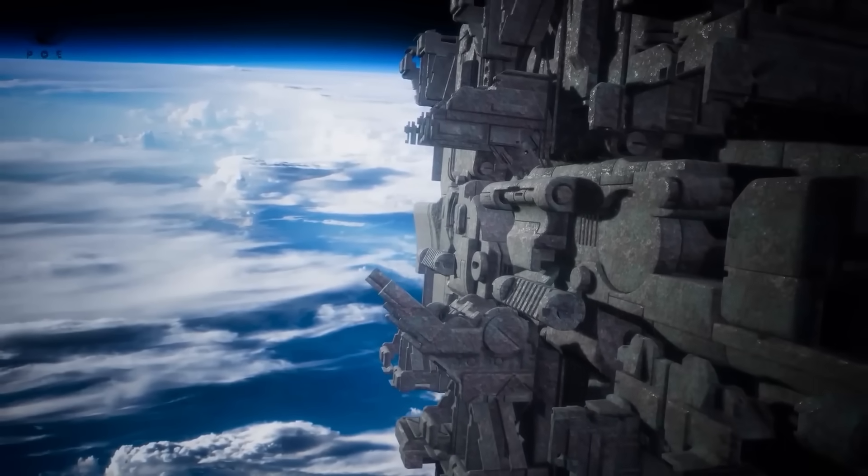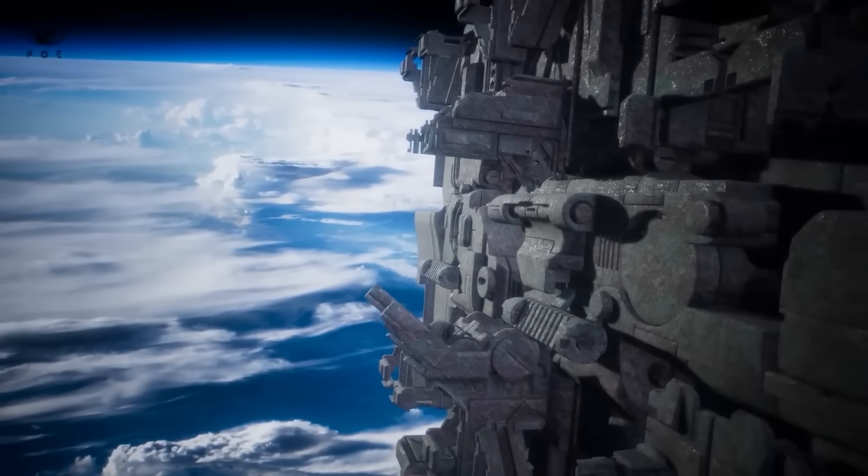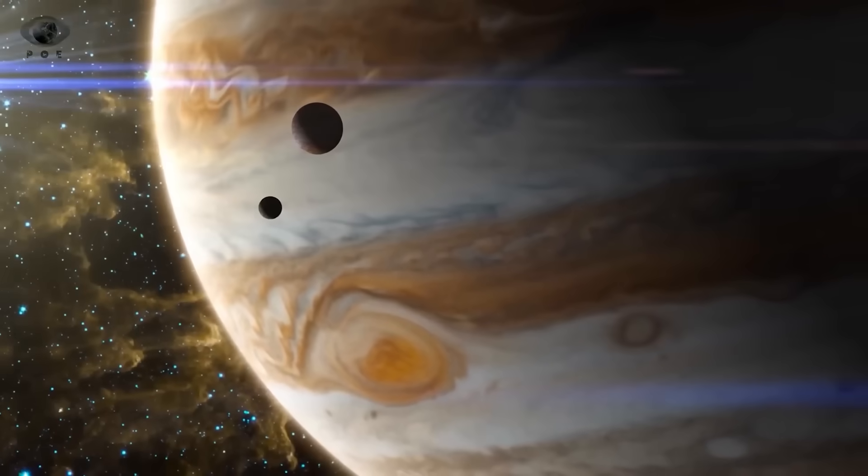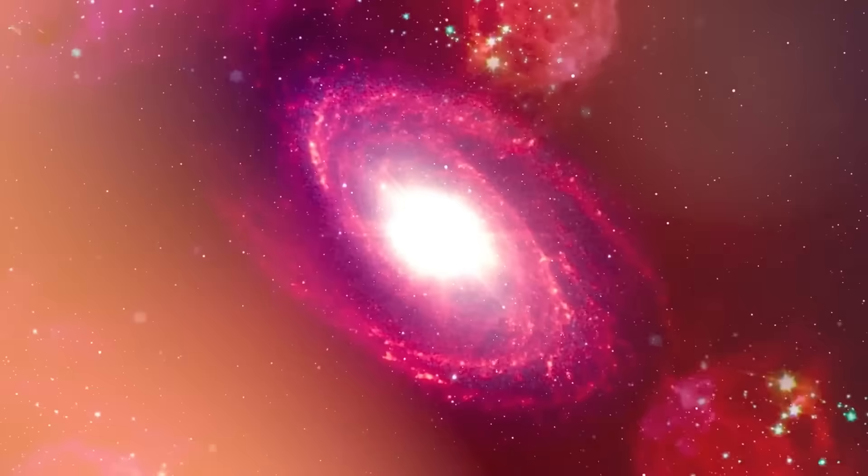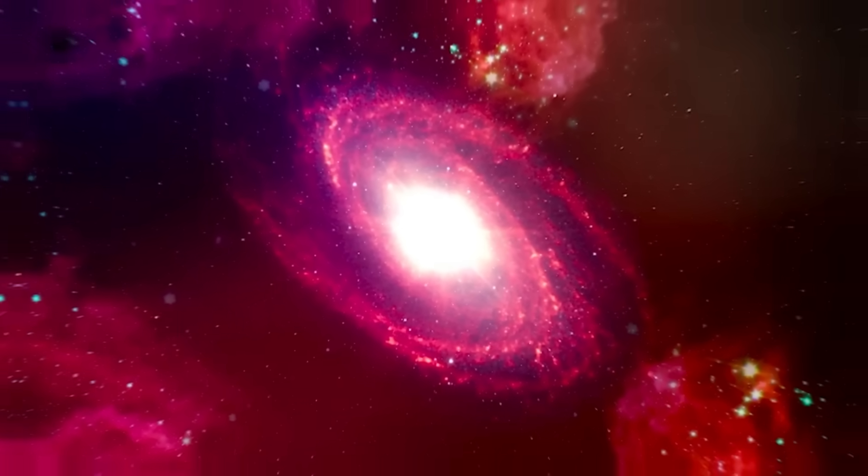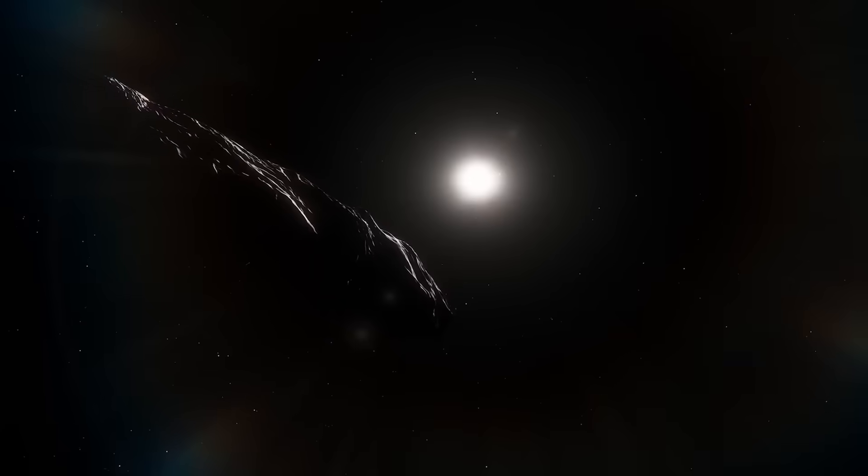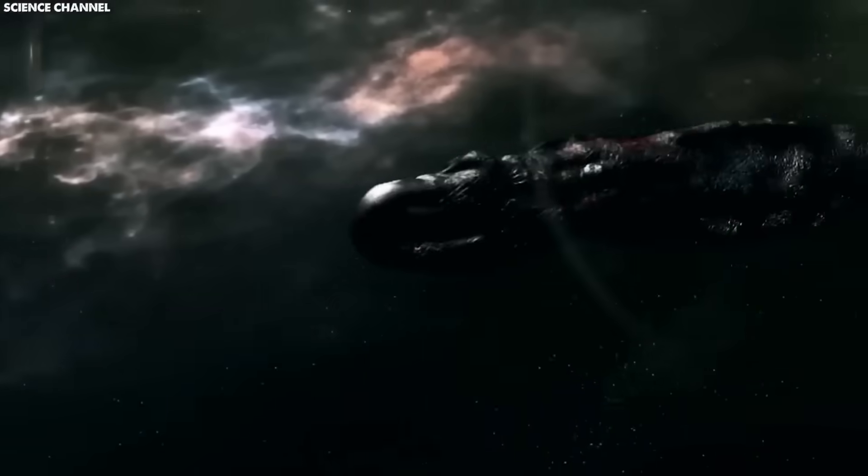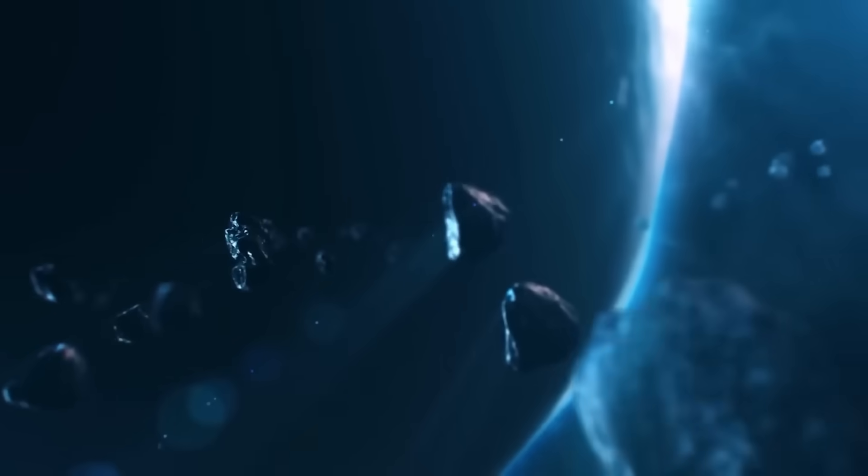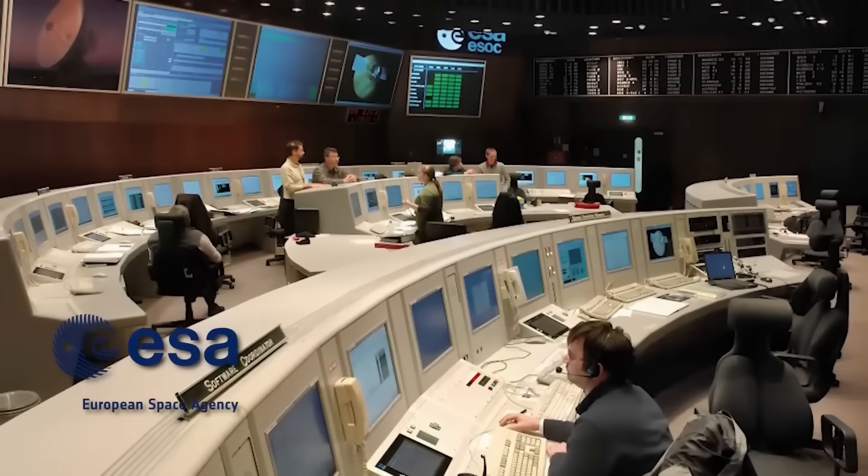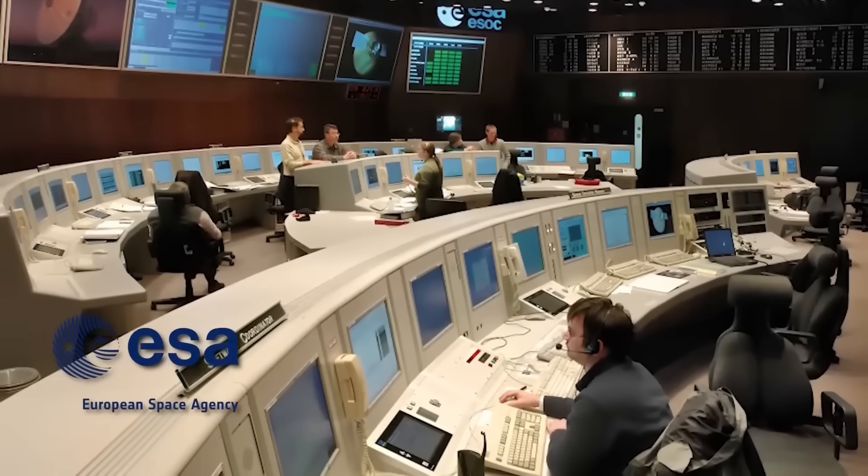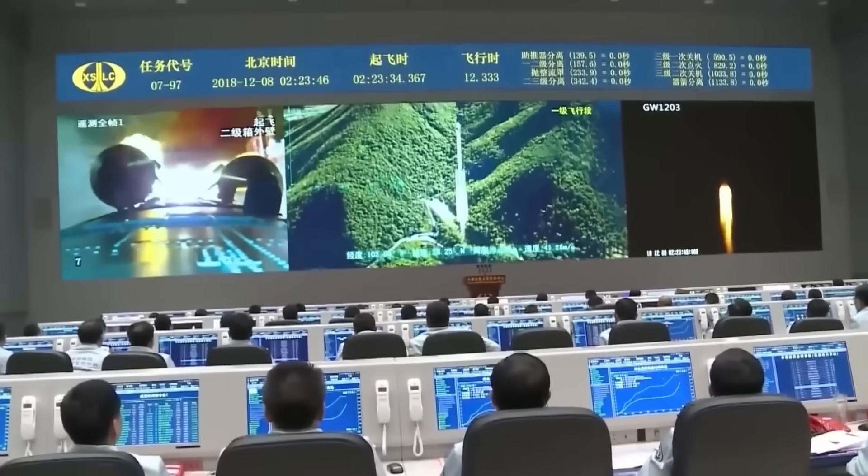For years astronomers told us that the universe was vast but predictable, a place where celestial objects obeyed the rules of gravity and physics without exception. But every once in a while something drifts into our solar system that doesn't belong. That something is 3i Atlas, an object first dismissed as a comet but one whose speed, trajectory, and strange behavior have made scientists whisper a far more unsettling possibility: that it may not be natural at all.